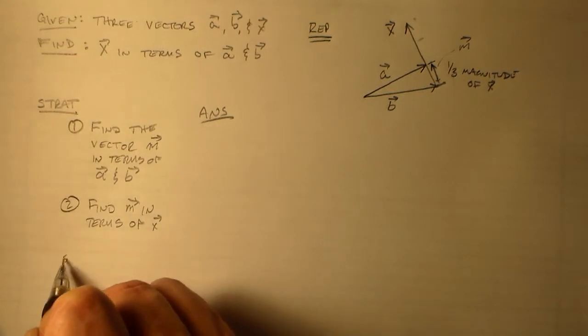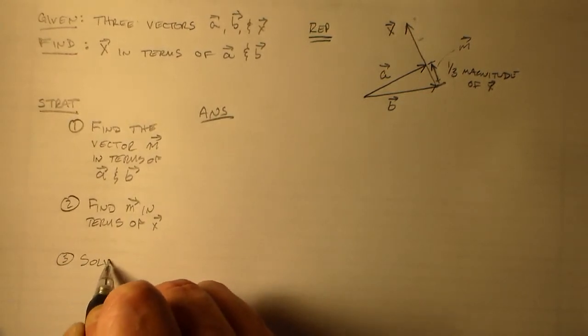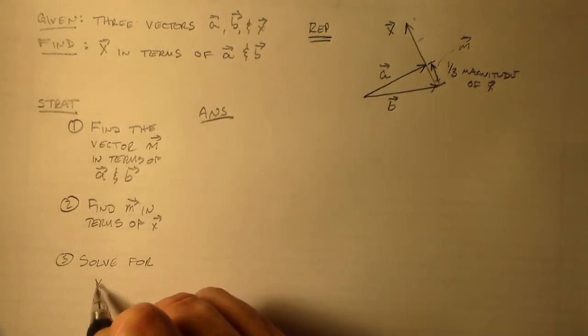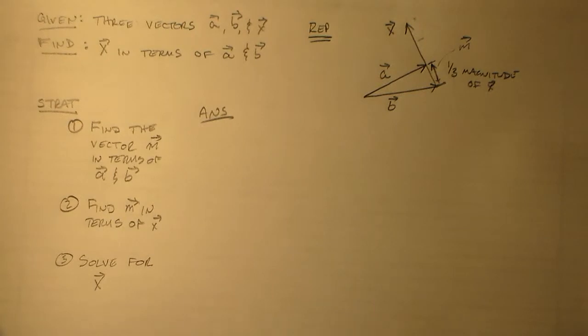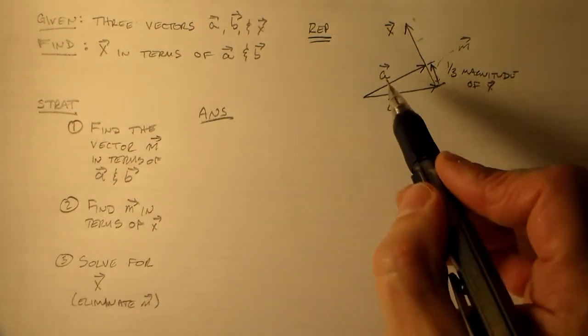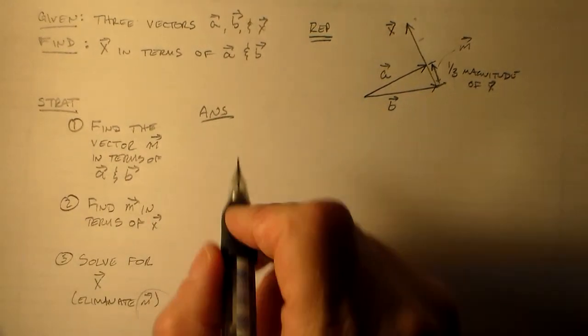And then three, we just solve for x. Aren't we just amazing? I guess another way to say that is we eliminate m. So m isn't something that we're really given. We know a little bit about it, but we're not really given it. We know mostly these two guys. So that's not really one of our givens, so we don't really want it in our answer. We want the answer to be in terms of our givens when we get there.